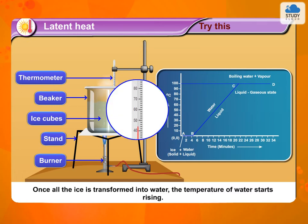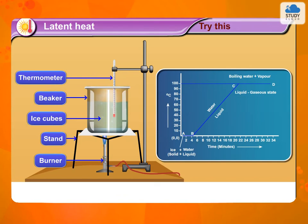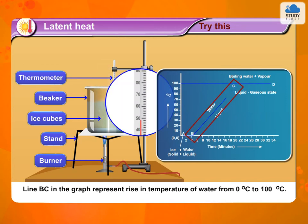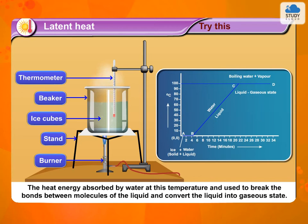Once all the ice is transformed into water, the temperature of water starts rising. It increases up to 100 degrees Celsius. Line BC in the graph represents rise in temperature of water from 0 degrees Celsius to 100 degrees Celsius. Thereafter, even though heat energy is supplied to water, its temperature does not rise. The heat energy absorbed by water at this temperature is used to break the bonds between molecules of the liquid and convert the liquid into gaseous state.